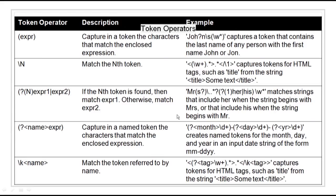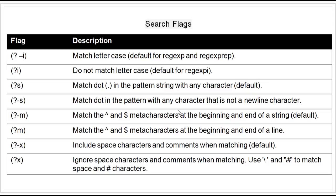Then we have token operators. Tokens are portions of matched text defined by enclosing part of the regular expression in parentheses. We can refer to a token by its sequence in the string — an ordinal token — or assign names to tokens for easier code maintenance and readable output. An expression inside parentheses captures the matching characters as a token. \n matches the nth token, and ?(n)expression1|expression2 applies an if-else condition based on whether the nth token is found. Search flags modify matching behavior and can appear after or inside parentheses separated by a colon.